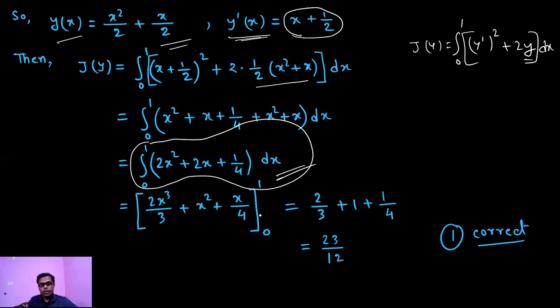Now put the boundary points. Putting these boundary points, we are getting 23 by 12. And this is our infimum value.